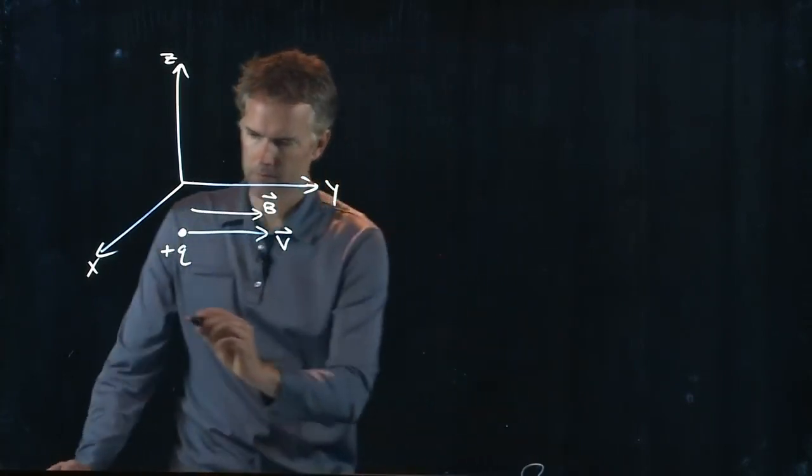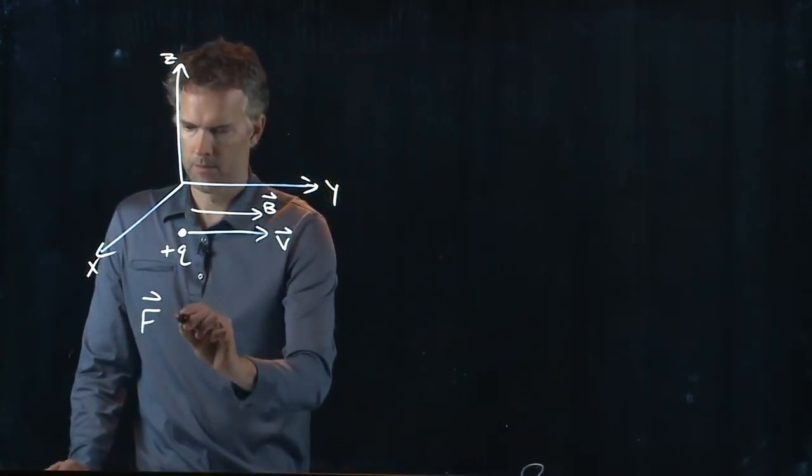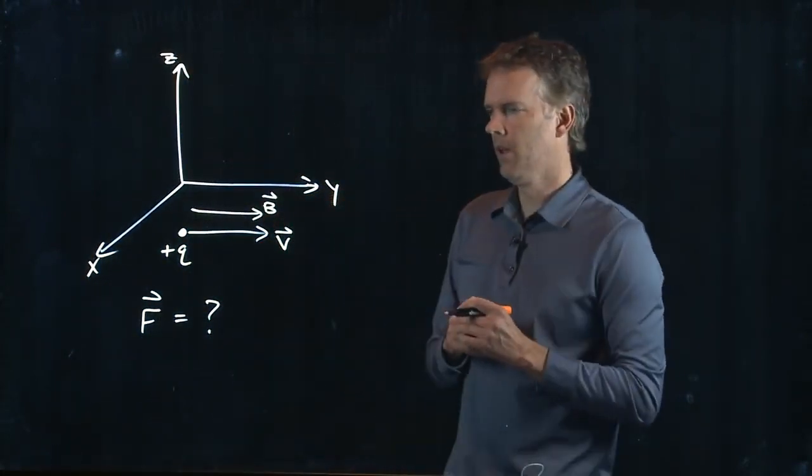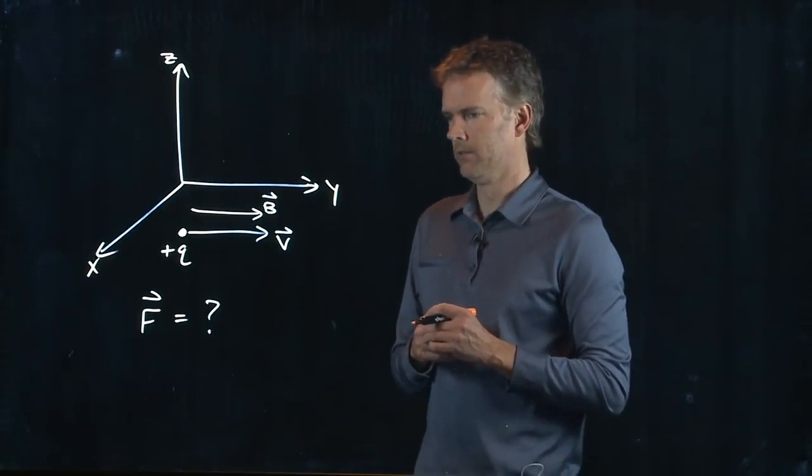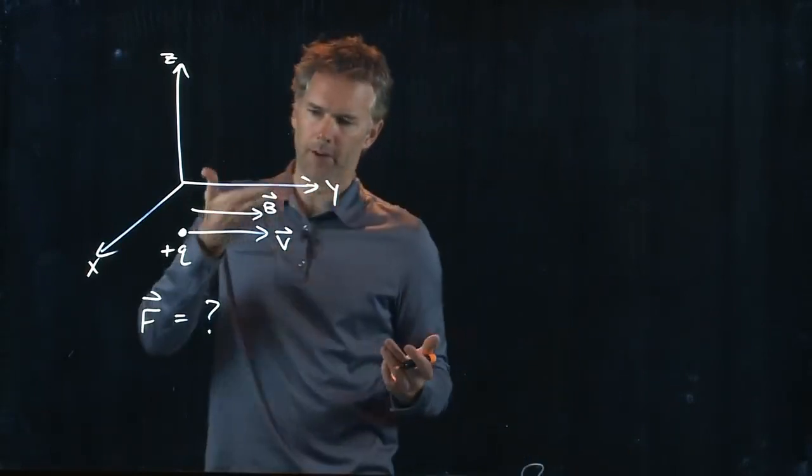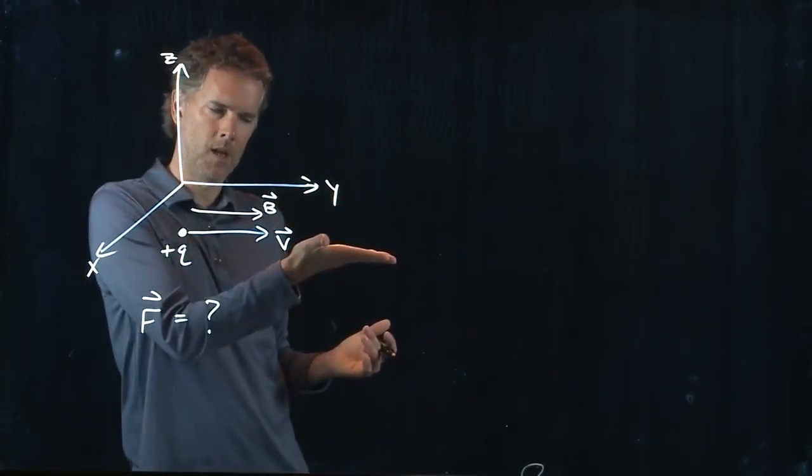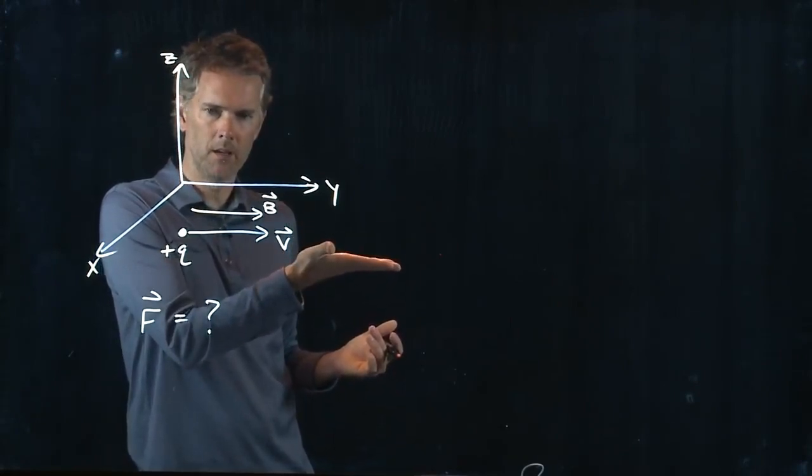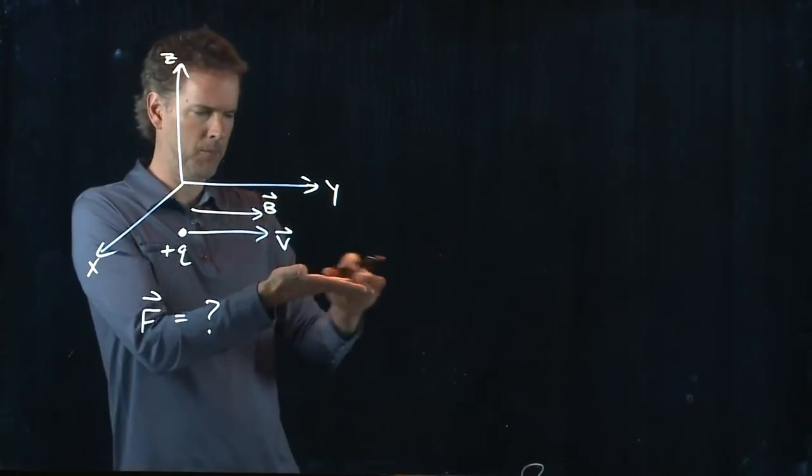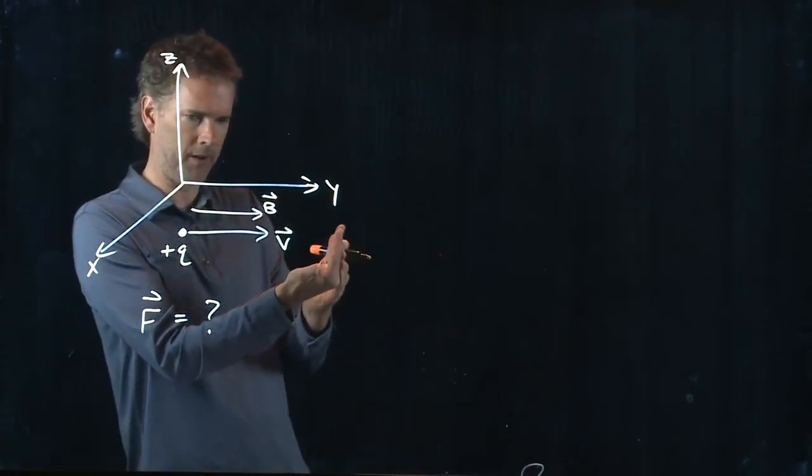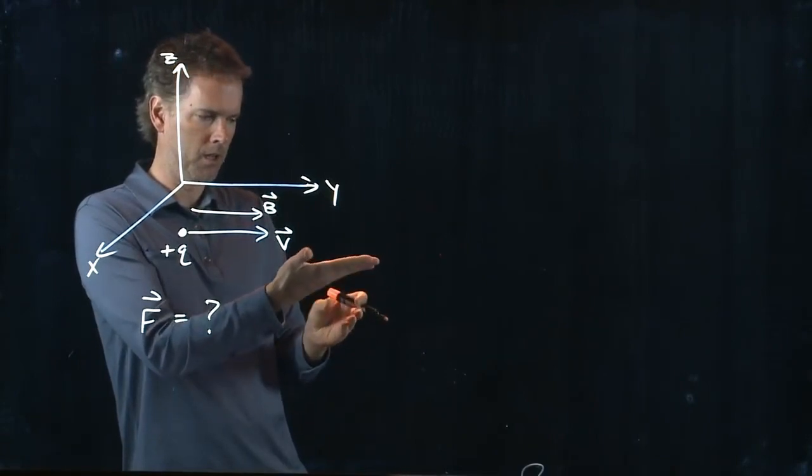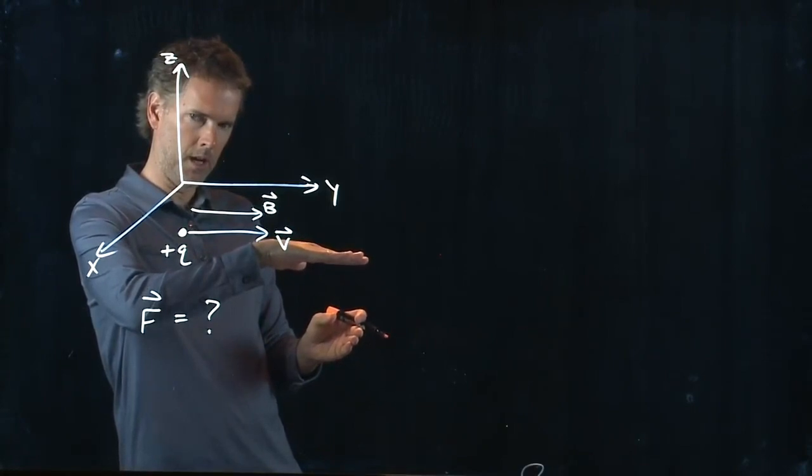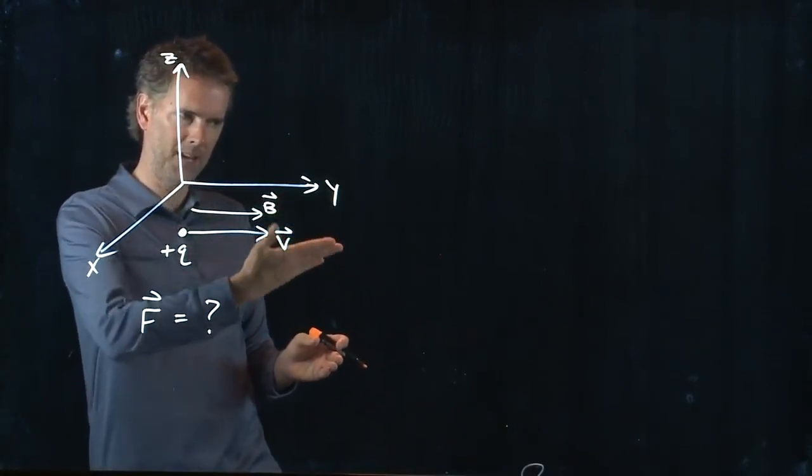What is the force on our charge? We can do the right-hand rule again. So you put your fingers straight in the direction of V, and then you have to curl them into the direction of B. But B is in the same direction as V, so I can't curl my fingers that way because they won't be pointing towards B. And so none of those directions make sense.